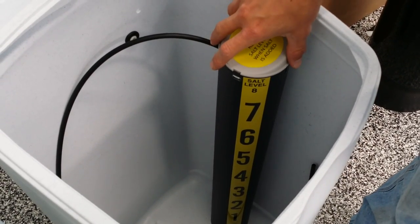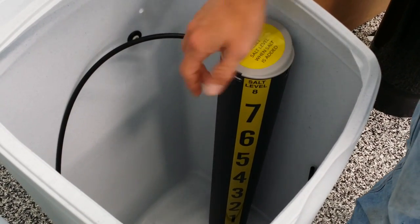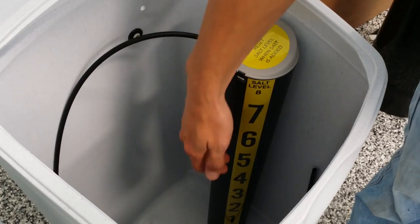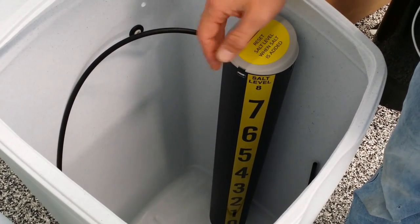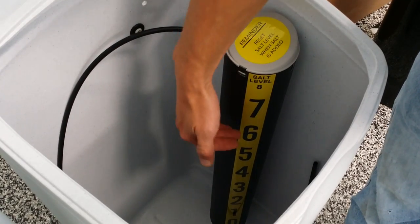When you're adding salt to your Eco-Water water softener brine tank, you'll notice there is a sticker that shows where the salt level is at. So let's just say today you're adding salt and you have enough to get it up to level 6.